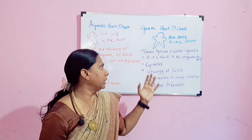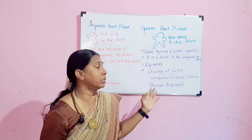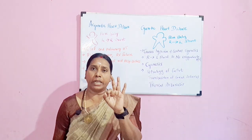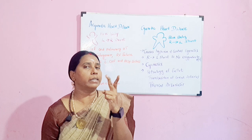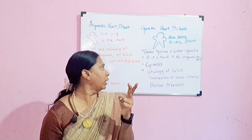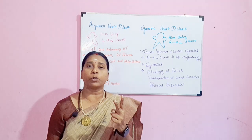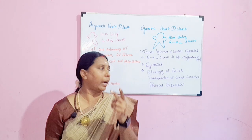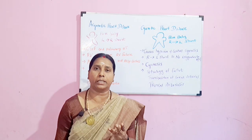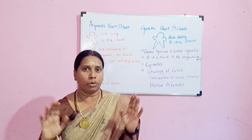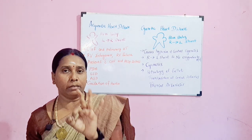In cyanotic heart disease we have three conditions: tetralogy of Fallot, transposition of the great arteries, and truncus arteriosus.